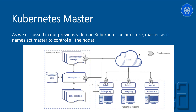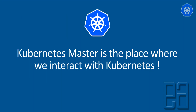The Kubernetes master is responsible for sending commands — it does whatever action we specify from within a file. The Kubernetes master is the place where we interact with Kubernetes, that's it. We will interact with Kubernetes only through the master, and the master is the one which will carry out all those interactions for us.